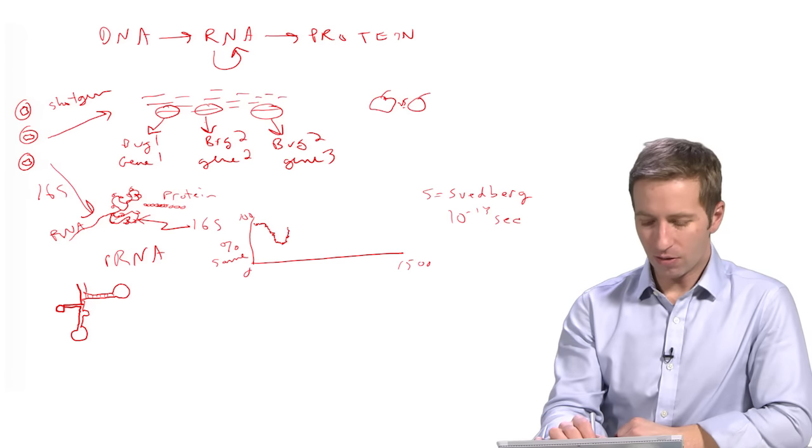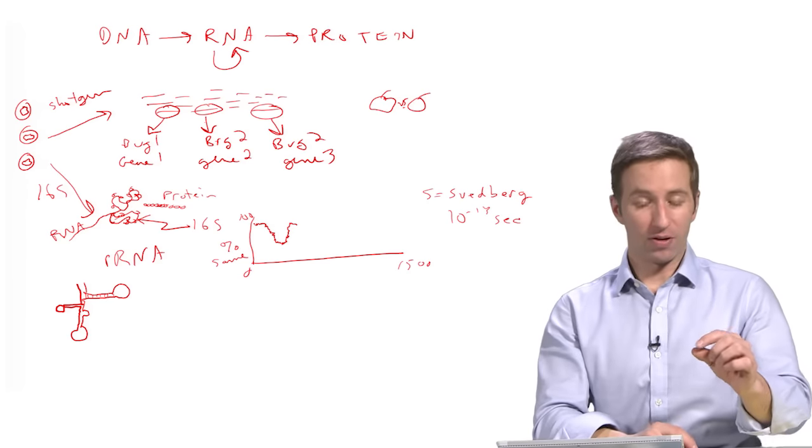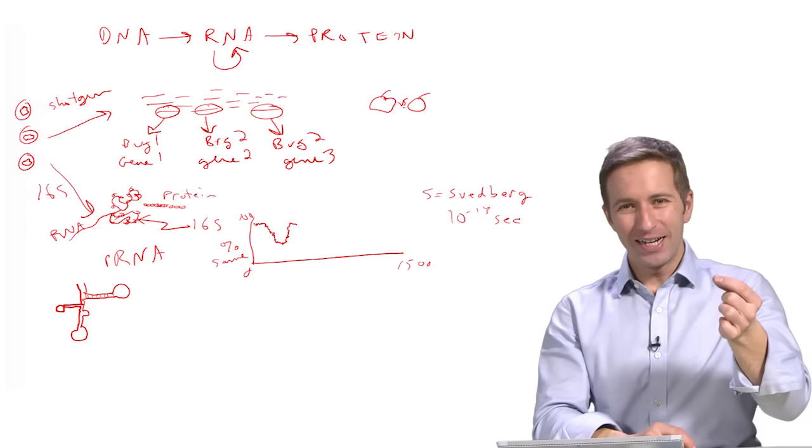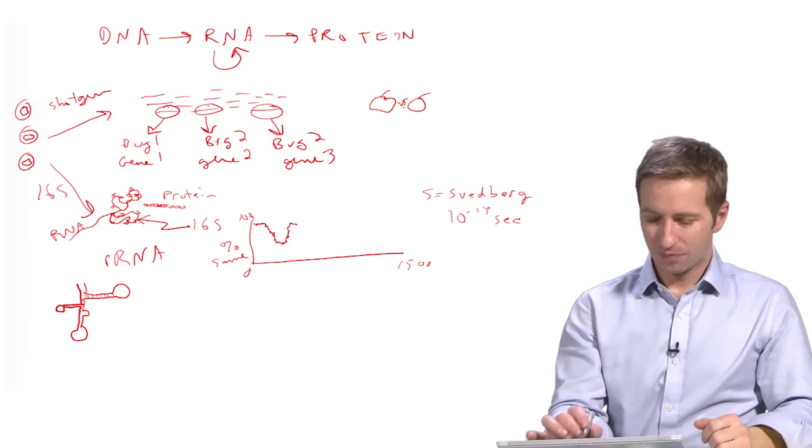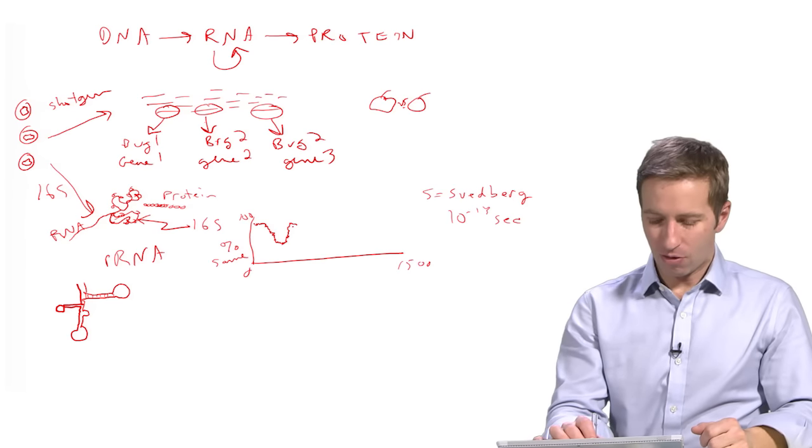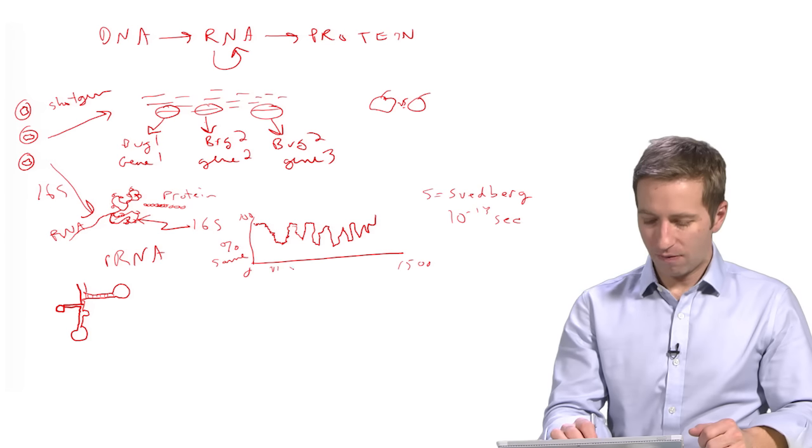Then you get to another section that's highly conserved. So this is a portion where the function is extremely important. If a little bug is born with a mutation there, the ribosome probably doesn't work, so it just dies. And then you go back to another conserved region, and another conserved region, and so on. And these are called V1, V2, V3, V4, up to V9.